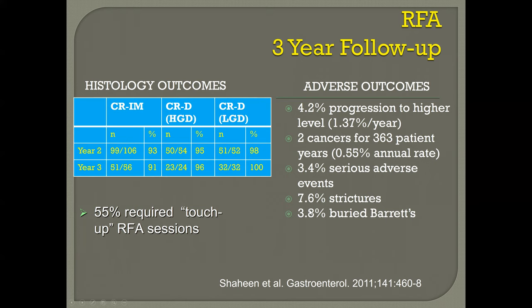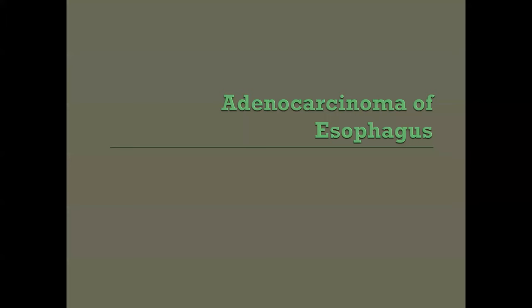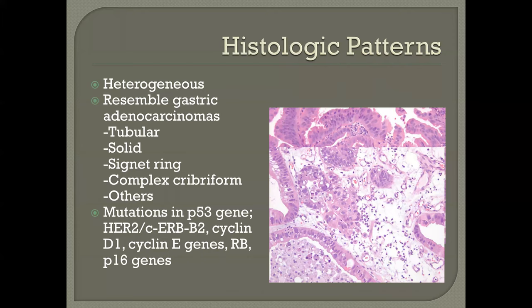There are some consequences of RFA. One of the more significant is so-called buried Barrett's — when the regrowing squamous epithelium grows over a metaplastic gland that has begun to undergo dysplasia, leaving behind the potential for occult development of non-visible carcinoma. That's rare, but not zero.